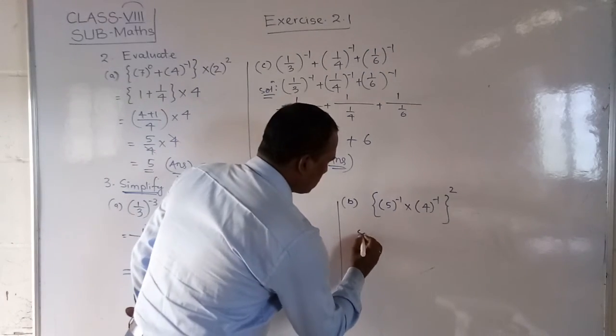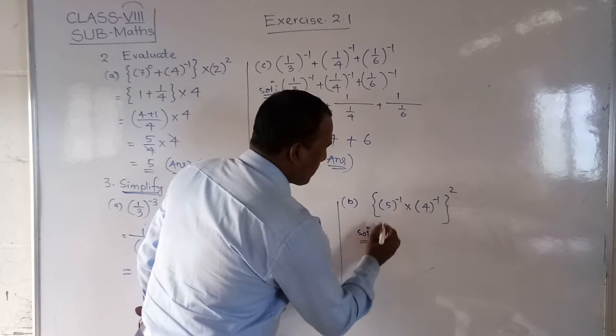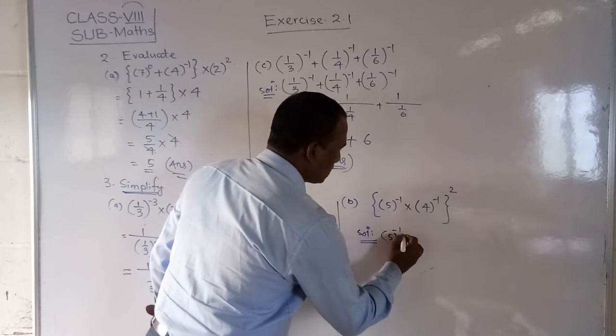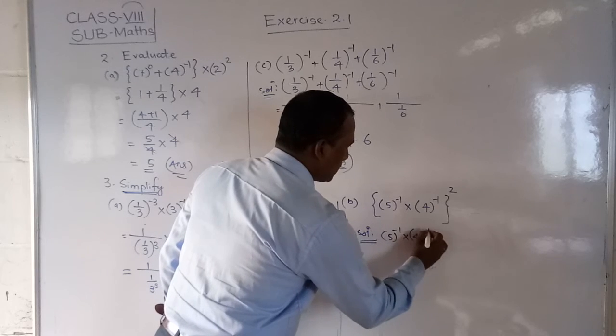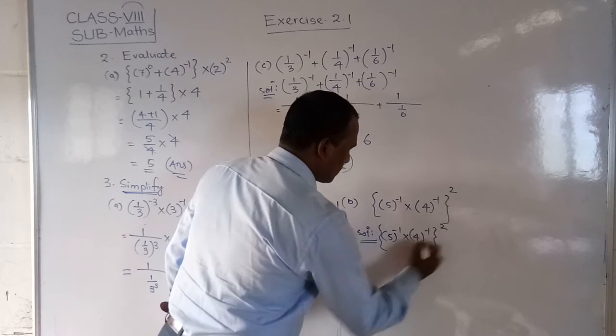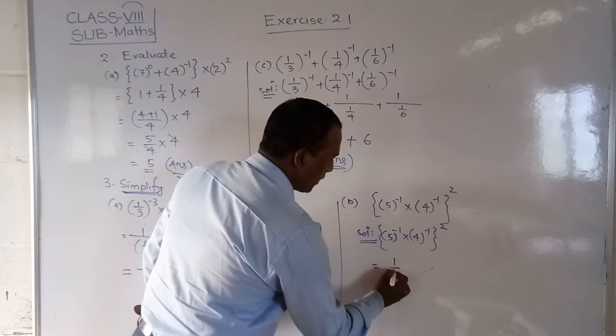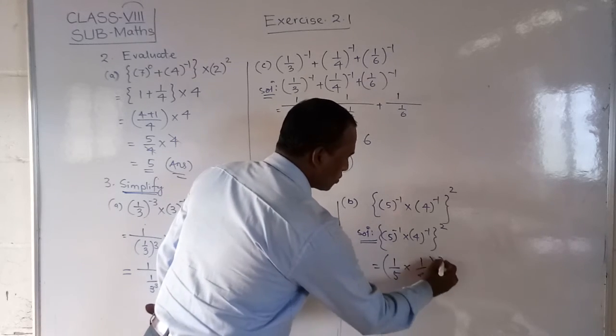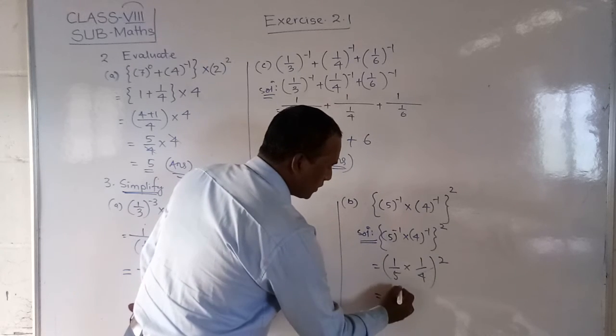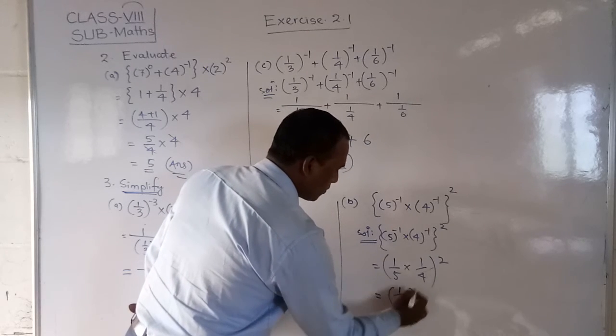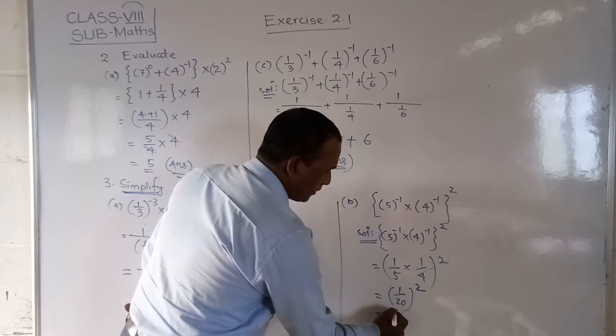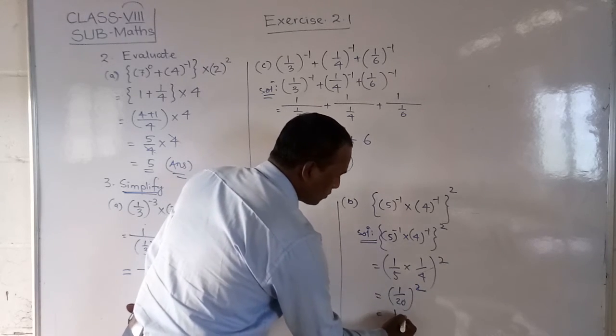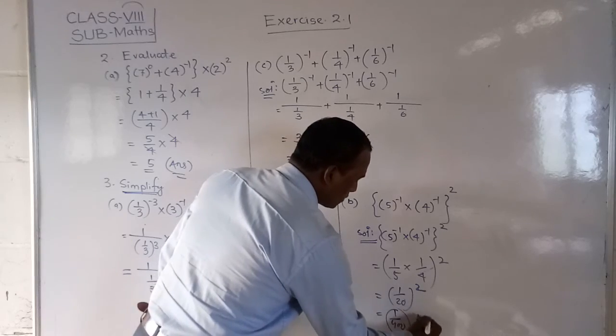Next solution. 5 to the power minus 1, into 4 to the power minus 1, squared. This is equal to 1 by 5, this is equal to 1 by 4, squared. Multiply, 1 by 20, squared. 1 by 20 means 1 squared and 20 squared is equal to 400. So this is our answer.